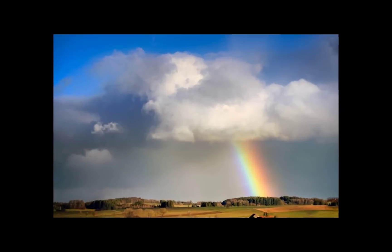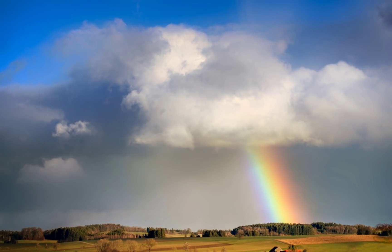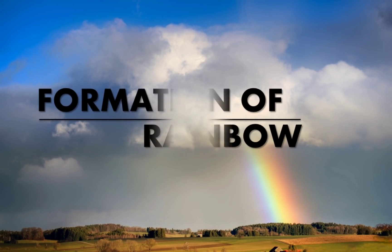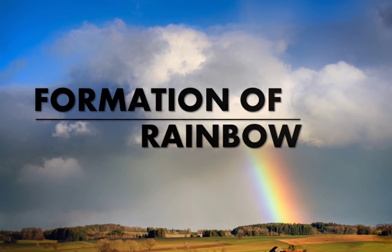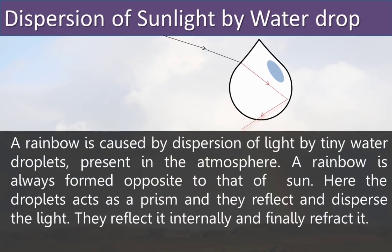A rainbow is caused by dispersion of light by tiny water droplets present in the atmosphere. A rainbow is always formed opposite to the Sun. Here the droplets act as a prism — they reflect and disperse the light through internal reflection, and finally reflect it out. This is how a rainbow is formed.